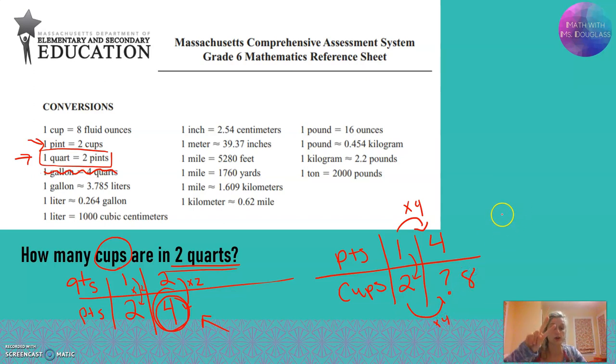So my final answer, remember I need two parts, is not just eight. I have to include my units, eight cups. And that's how you do some customary conversions.